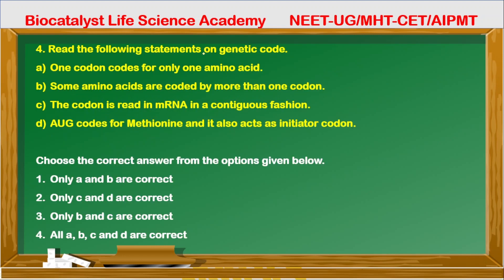Question 4: Read the following statements on genetic code. Statement one — one codon codes for only one amino acid. Yes, for example, AUG codes for only one amino acid — this is correct. Statement two — some amino acids are coded by more than one codon. Yes, more than one codon is possible for one amino acid — also correct. Statement three — the codon read in mRNA is in a contiguous fashion, read 5 prime to 3 prime continuously — correct.